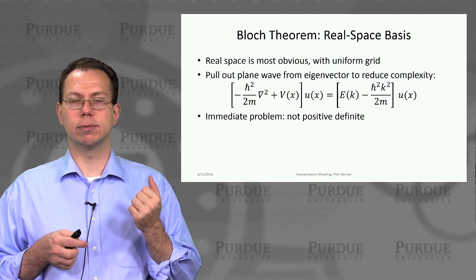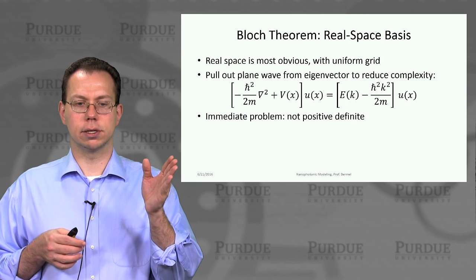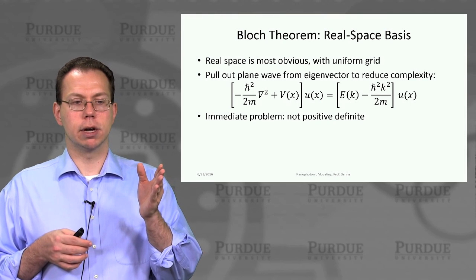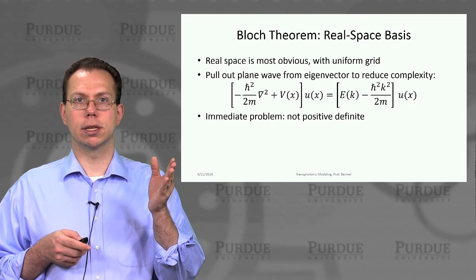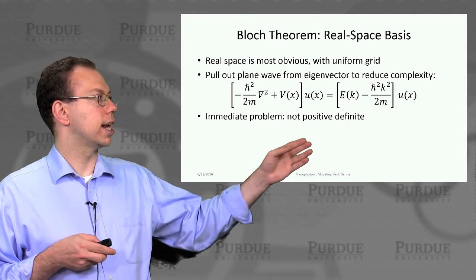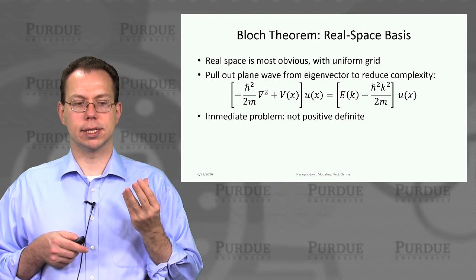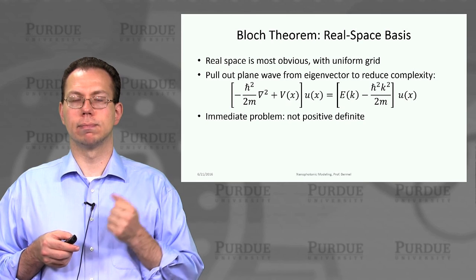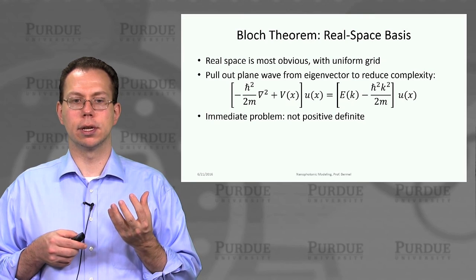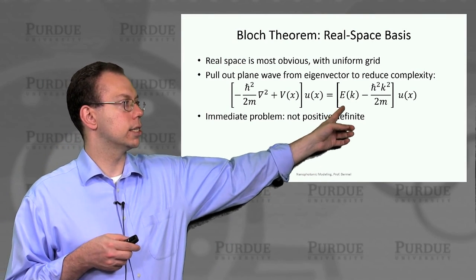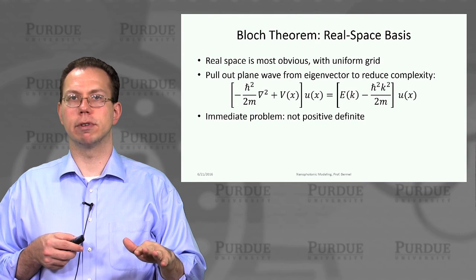One option is real space — we break up real space into different grid points and try to solve it. Once we've done that, we can pull out the plane wave associated with h-bar squared k squared over 2m, and that is subtracted from E of k on the right-hand side. However, there is a problem with this system: it's not positive definite. That makes it very hard to solve numerically with many popular tools, because some eigenvalues obtained from the system will be negative values — it's not bounded from below, and you can get arbitrarily negative values.